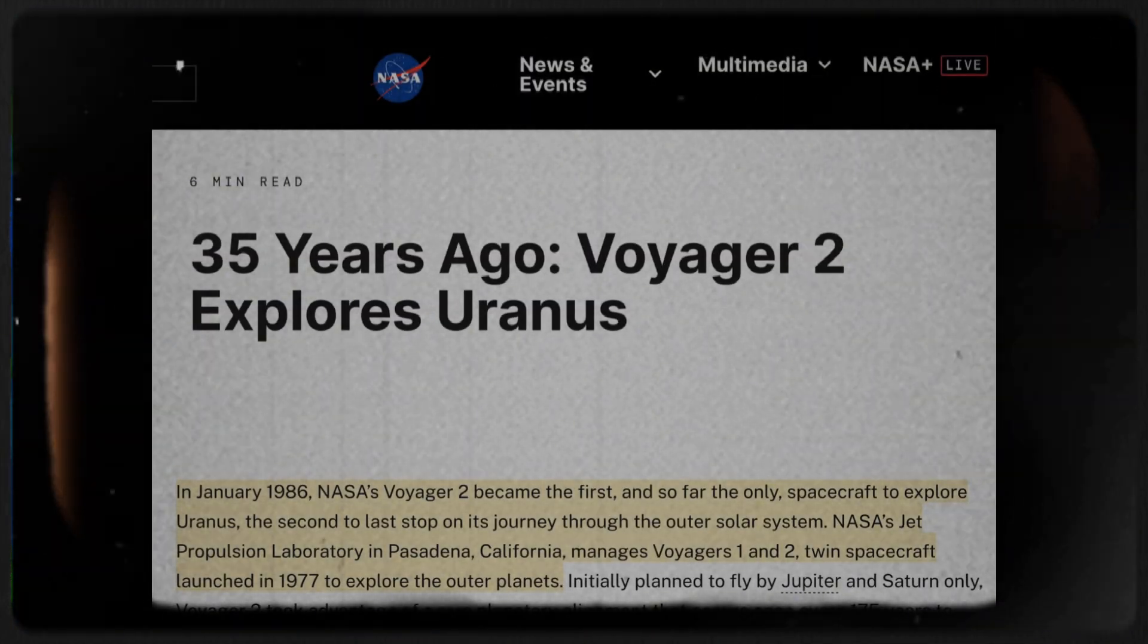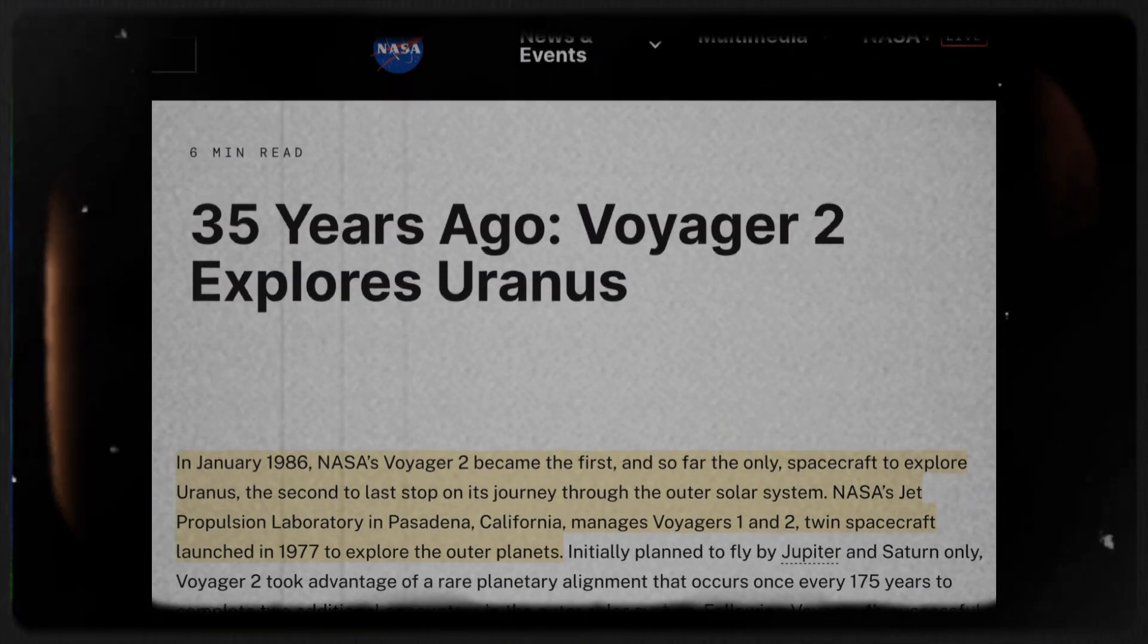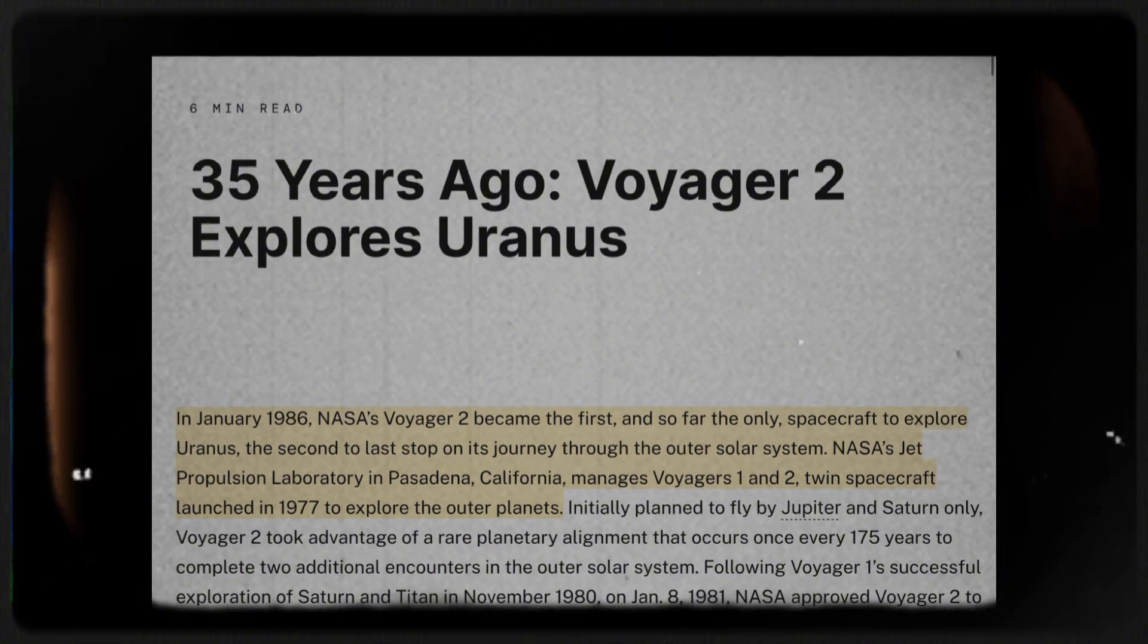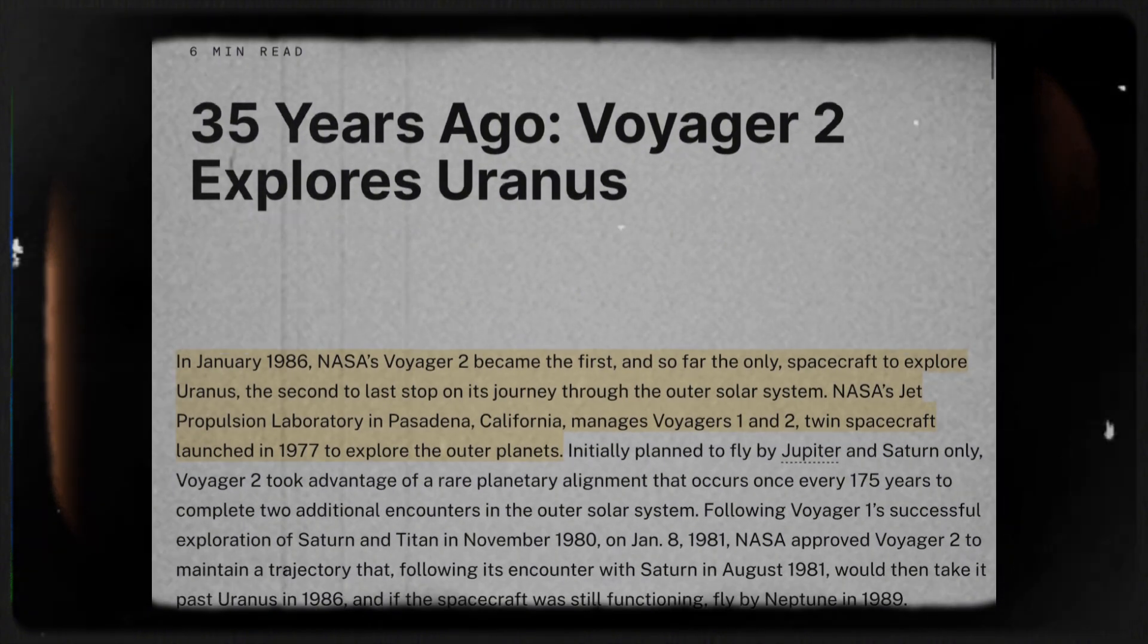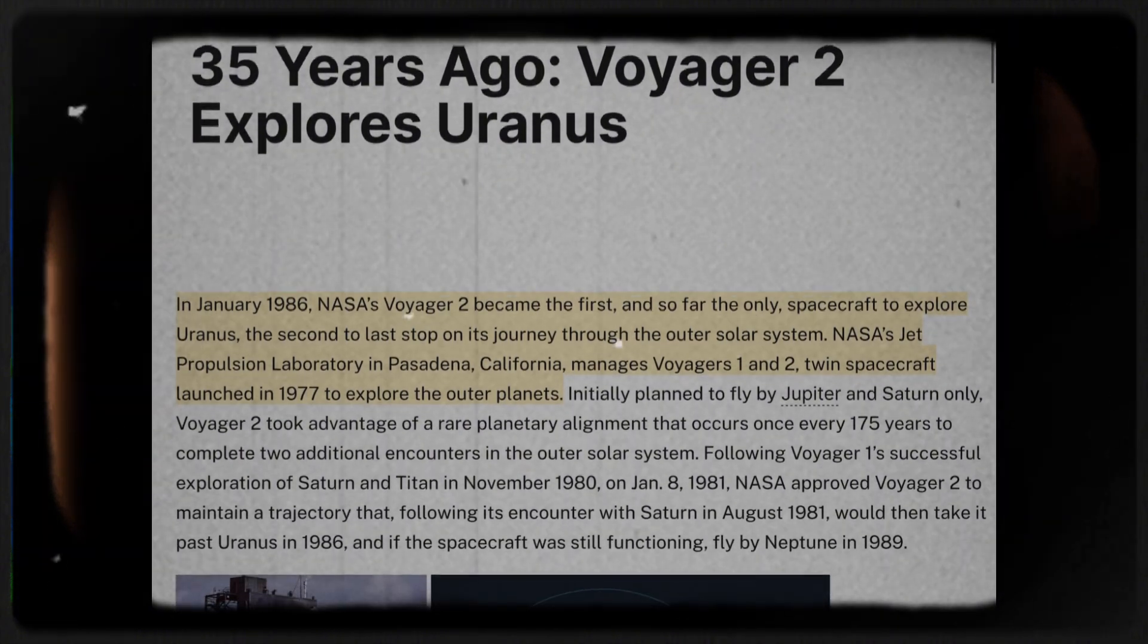In 1986, Voyager 2 became the first spacecraft to fly by Uranus, and three years later it visited Neptune, making it the only spacecraft to have explored these distant planets.